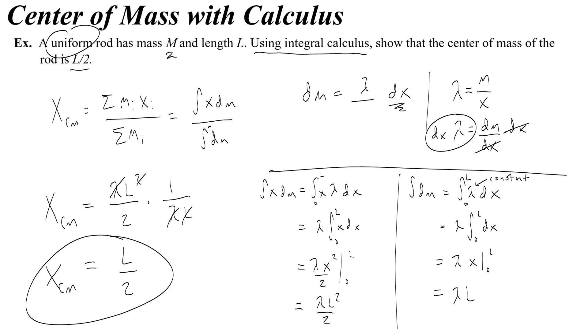Great. There's only one other way that the AP test would ask you to do this, and that is with a rod that does not have uniform density. Instead, the density changes throughout.